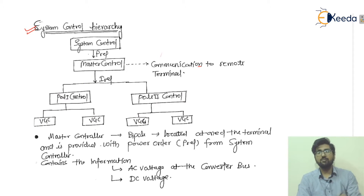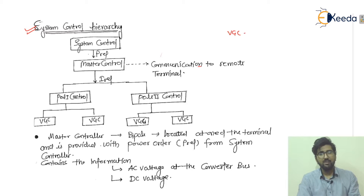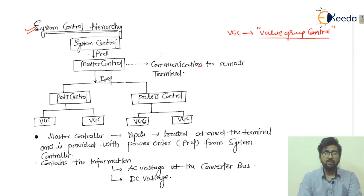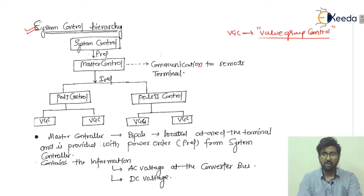These are further divided into the VGC. The VGC stands for Valve Group Control. This valve group control relates to your thyristor valve — it talks about where different types of valves are connected. Considering the six-pulse thyristor, it will have six valves connected, as we have seen in chapter two.